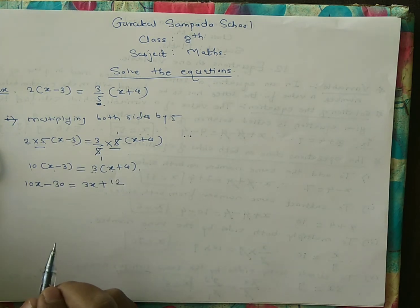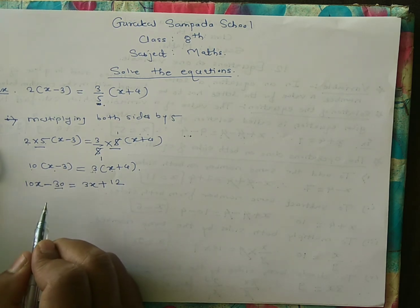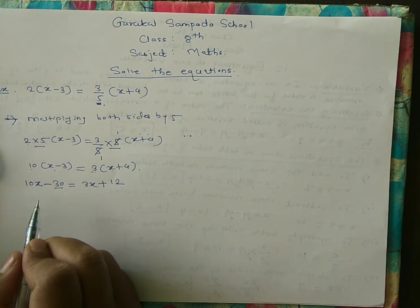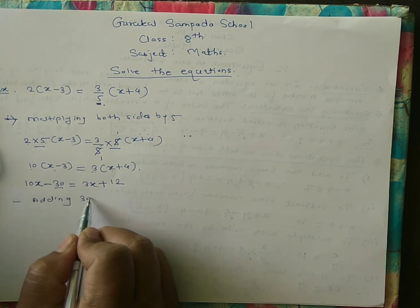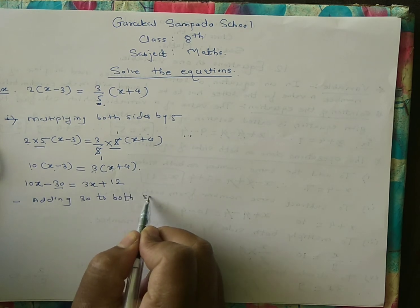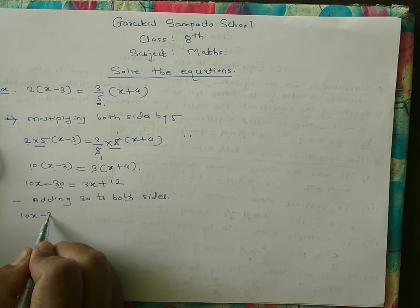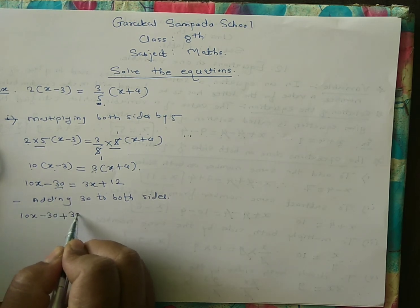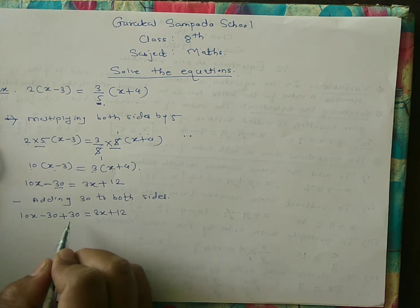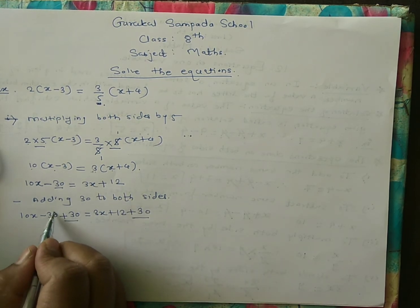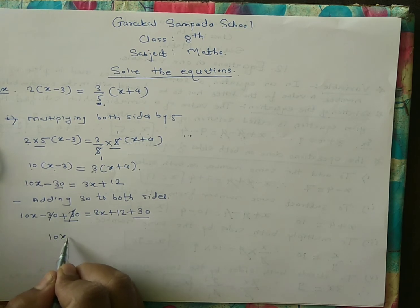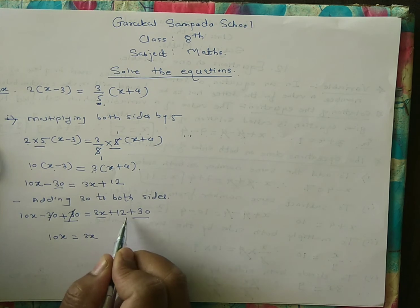The next operation is adding 30 to both sides. On the left side we have 10x minus 30, so we add plus 30 to cancel it. On the right side 3x plus 12, we also add plus 30. So minus 30 plus 30 becomes 0, leaving 10x on the left. On the right, 12 plus 30 gives 42, so we have 10x equals 3x plus 42.